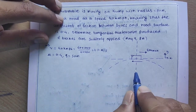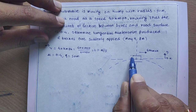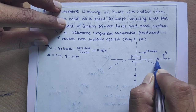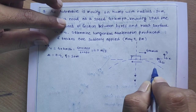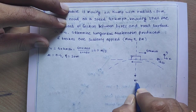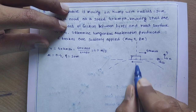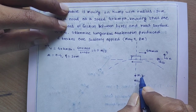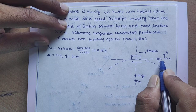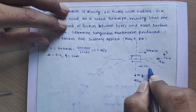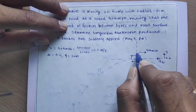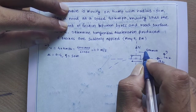Now we have to draw the FBD of this problem. This is the curve, and this is the automobile moving in the rightward direction at 40 km per hour. The direction of the acceleration: AT is always tangential to the curve, and AN is always directed towards the center. The weight of this automobile, mg, acts in the downward direction. As the automobile is moving rightward, the frictional force μN acts in the leftward direction, and the normal reaction N acts in the upward direction.